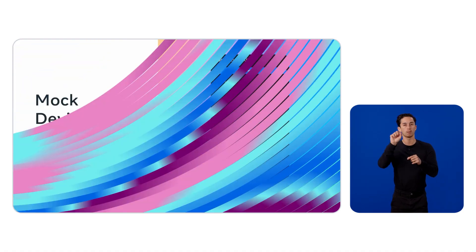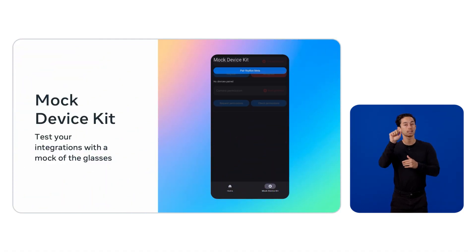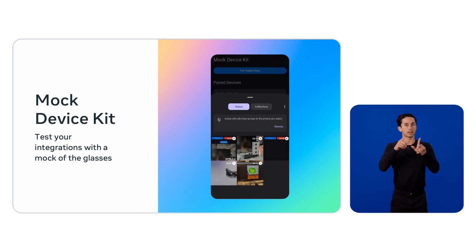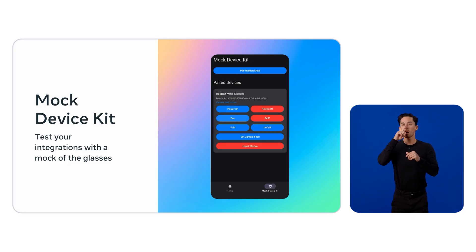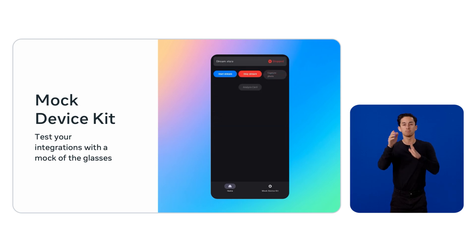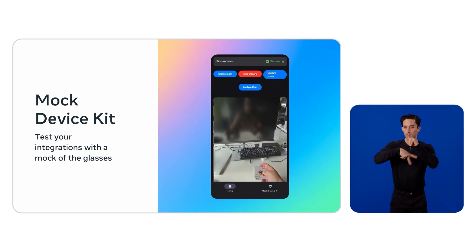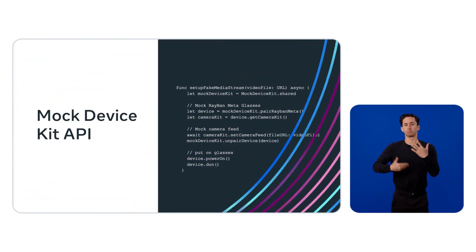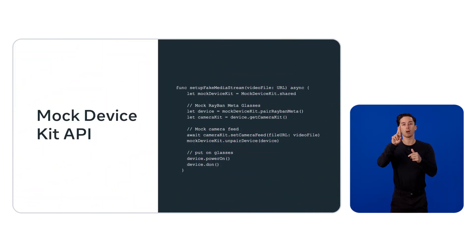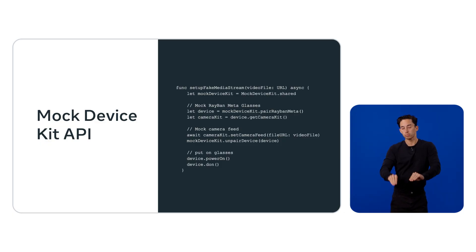Mock device kit is a framework designed to facilitate testing both successful and failure scenarios of SDK integrations. By leveraging mock device kit's API, you can perform interactive and automated tests that involve simulating devices, mocking their capabilities, and altering their states — whether you want to cover your app with integration tests, end-to-end tests, or just quickly iterate over the development. Using the mock device kit in test is quite intuitive. For example, here we're pairing simulated Ray-Bans, then mocking the camera feed by providing it a video file, and calling APIs to simulate putting the glasses on. Now we're able to put assertions and interact with our app in test scenarios.